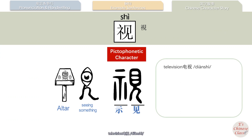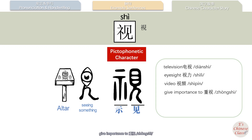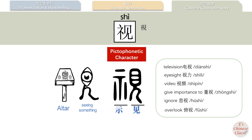For example: television — 电视; eyesight — 视力; video — 视频. The extended meaning is to inspect. For example: give importance to — 重视; ignore — 忽视; overlook — 俯视.